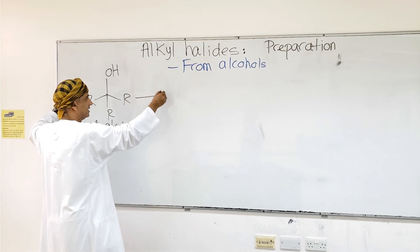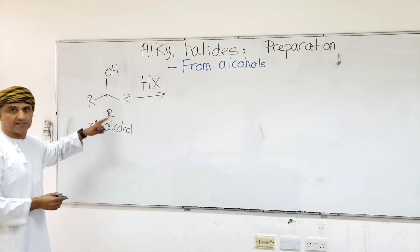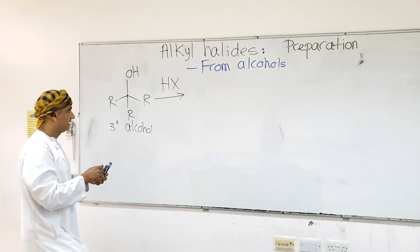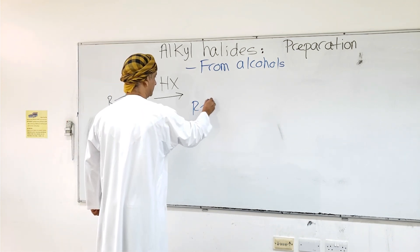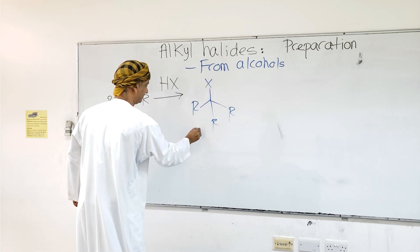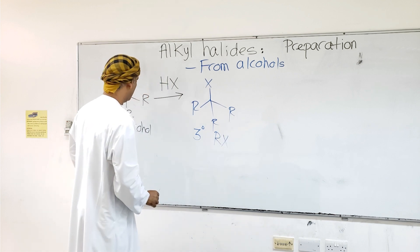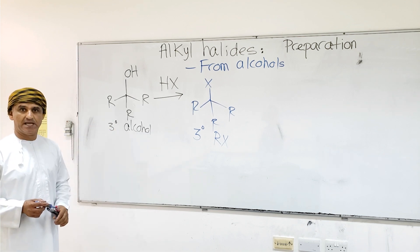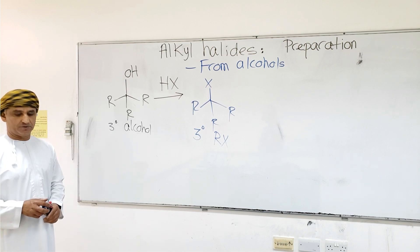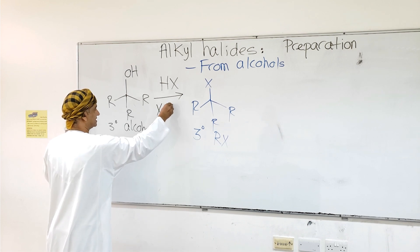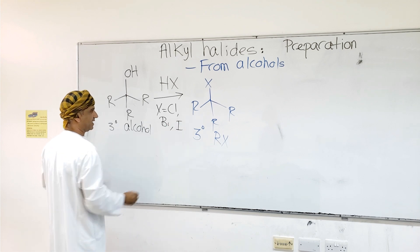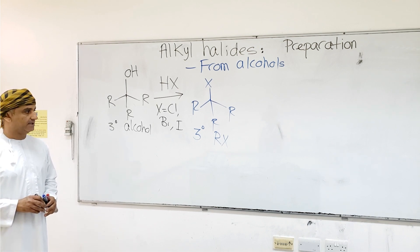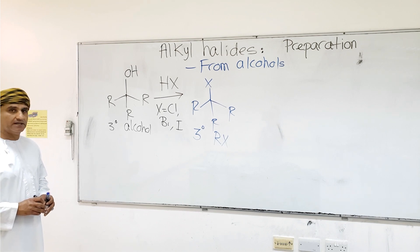Tertiary alcohols can be reacted with HX in general, and the corresponding tertiary alkyl halide is produced. The OH would be substituted by X from HX, giving the tertiary alkyl halide, or tertiary RX. HX could be HCl, HBr, or HI. This is how to make tertiary alkyl halides from tertiary alcohols.